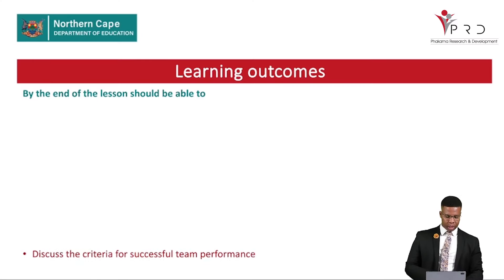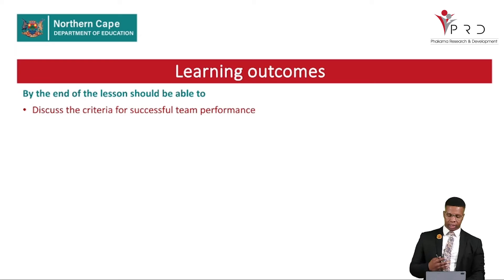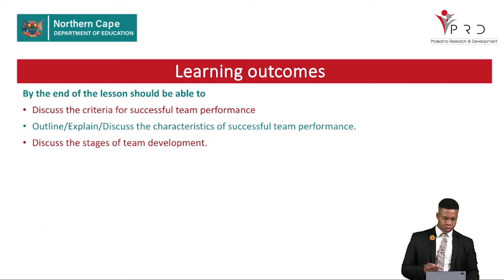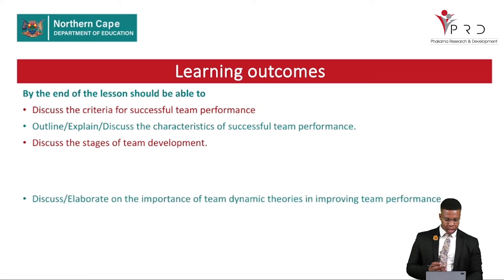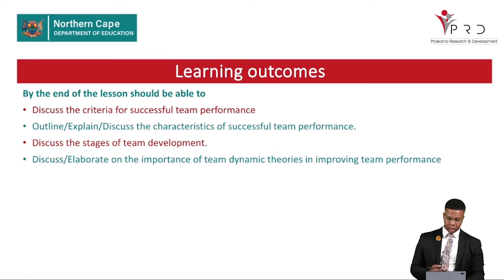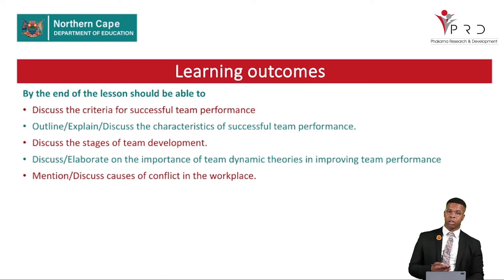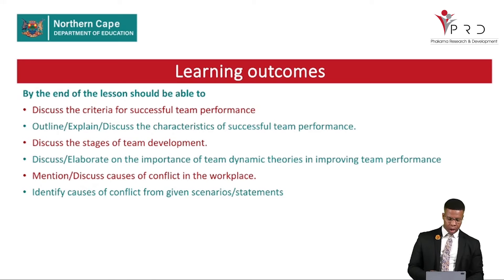By the end of this lesson you should be able to discuss the criteria of a successful team performance, outline or explain the characteristics of a successful team, discuss the stages of team development, elaborate on the importance of team dynamic theories in improving team performance, and mention or discuss the causes of conflict in the workplace.